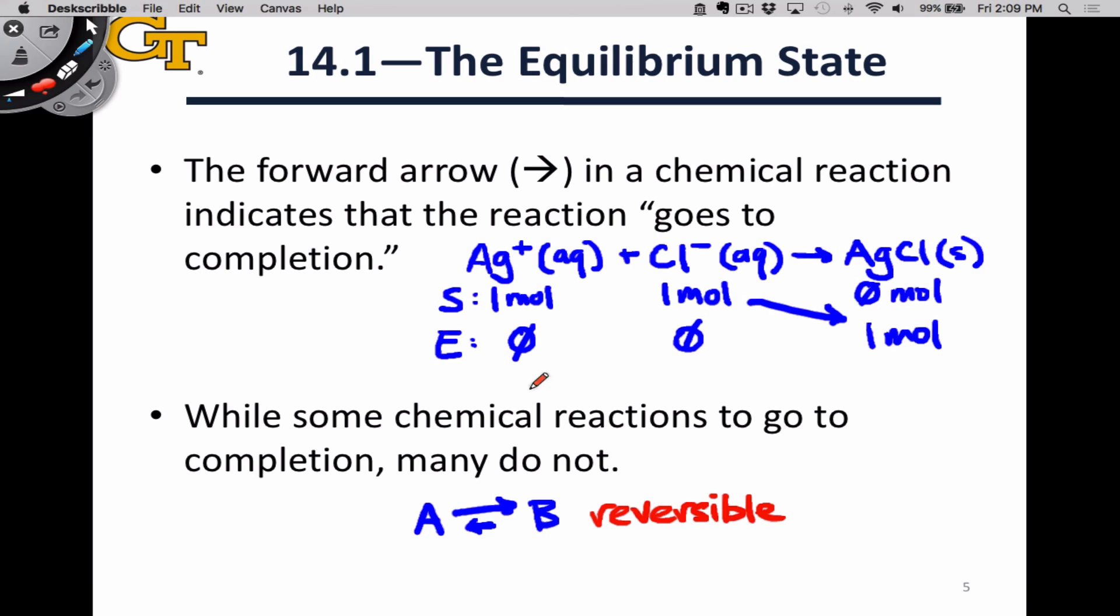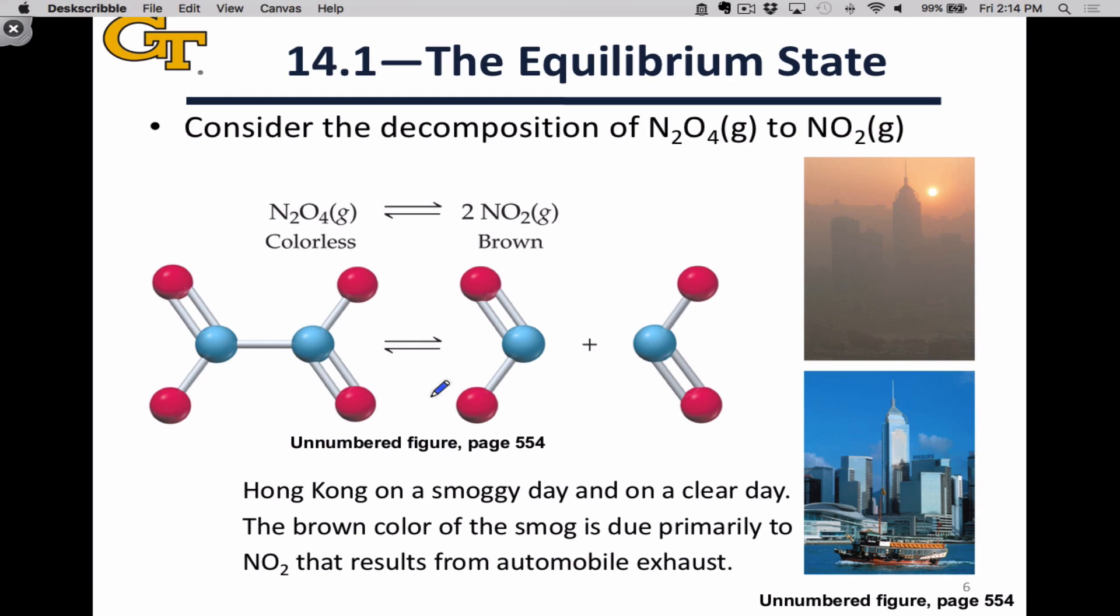When we're dealing with reversible reactions, we can't just use the tools of stoichiometry. The approach to predicting how much product we're going to have involves somewhat more complicated conceptual thinking. Here's an example of a reversible reaction: the decomposition of N2O4 gas to form two NO2 gas molecules. This reaction proceeds through cleavage of the N-N bond that links the two NO2 fragments together. This is a reversible reaction, meaning that not only can N2O4 break apart to form NO2 molecules, but NO2 molecules can reassociate to form N2O4. For example, in Hong Kong on a smoggy day, we have a lot of the brown NO2 present. That can reassociate to form N2O4, which might be colorless, but the N2O4 can also break apart to reform NO2.